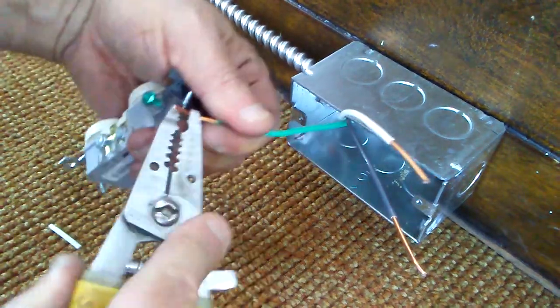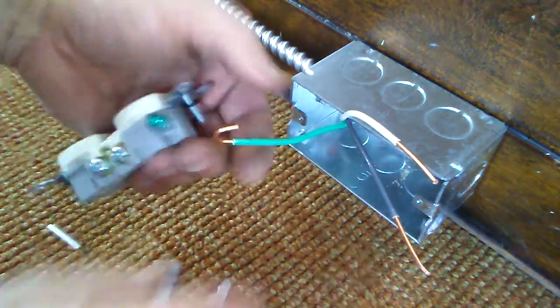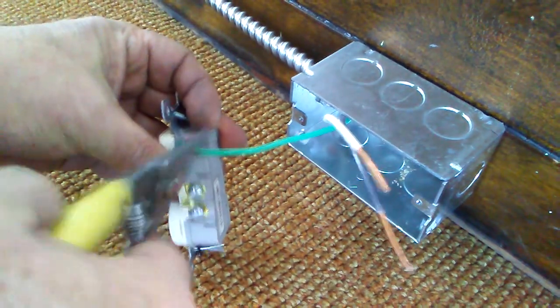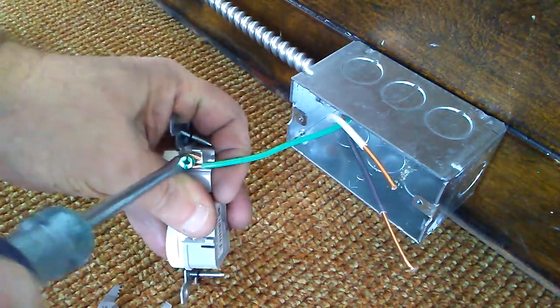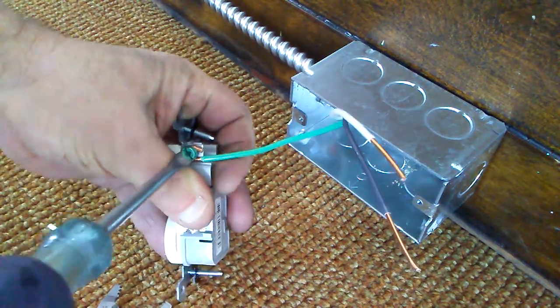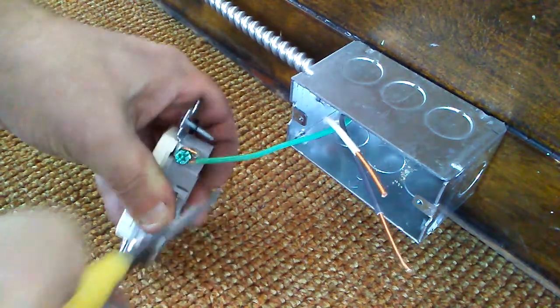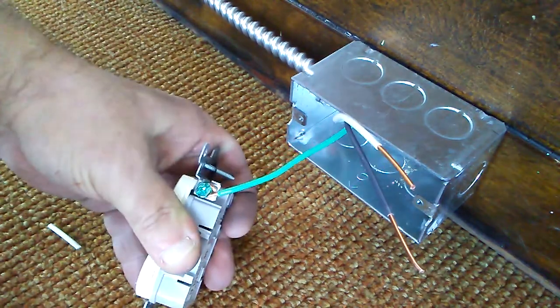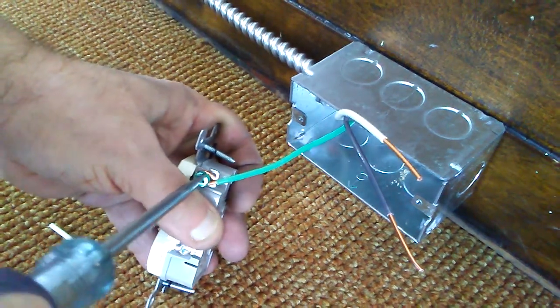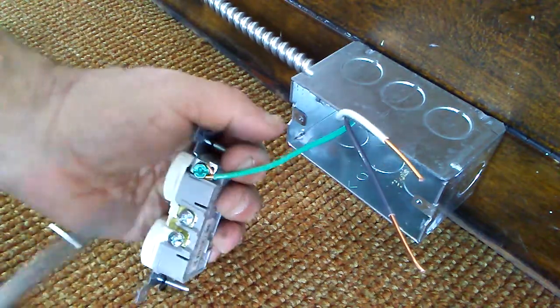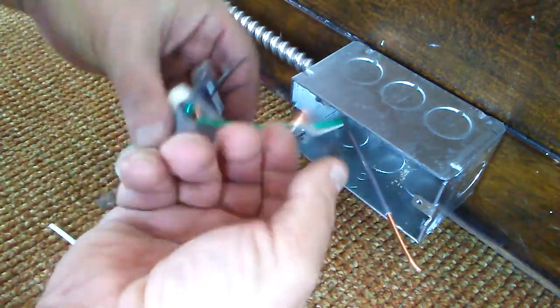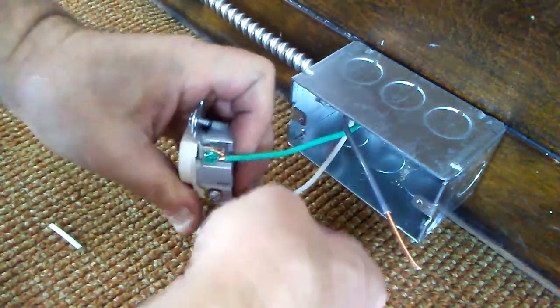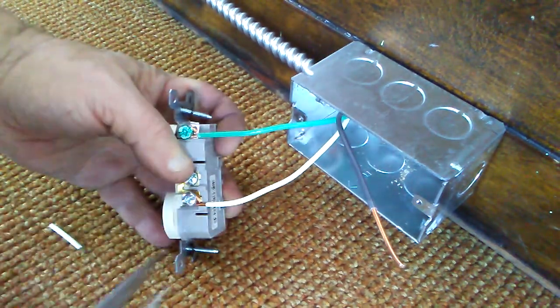We're going to hook the ground wire up, make the loop the direction that the screw turns. Close it. We're going to close this loop a little bit better. Close the loop in the direction that the screw turns. Close the loop.